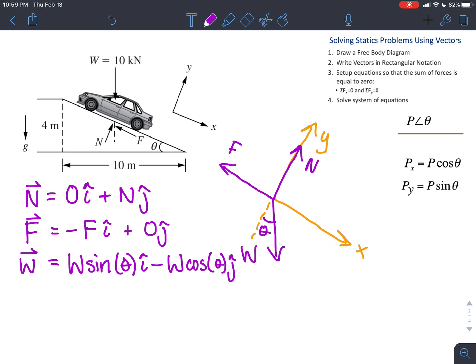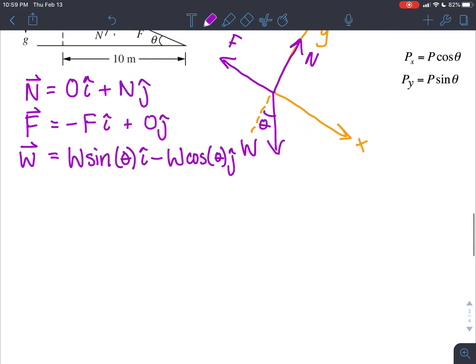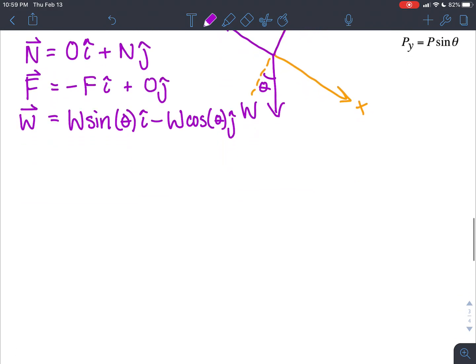So now that we have our three components, we can move on to writing our summations of forces in the x and y direction. Our summation of forces in the x and y should always equal zero, because our car is parked and not moving on the ramp.